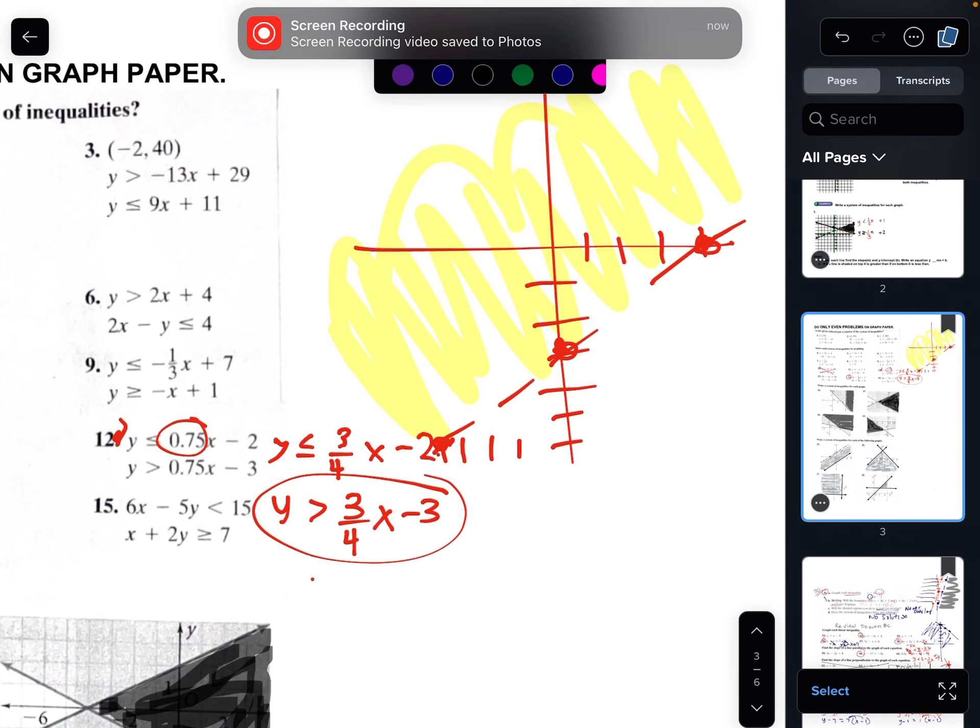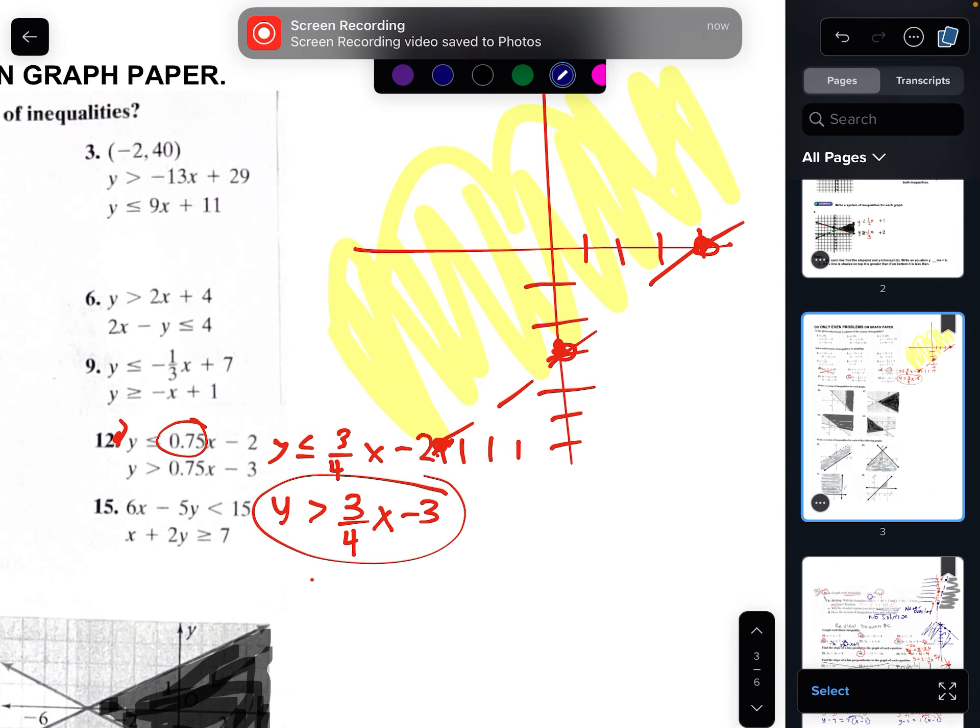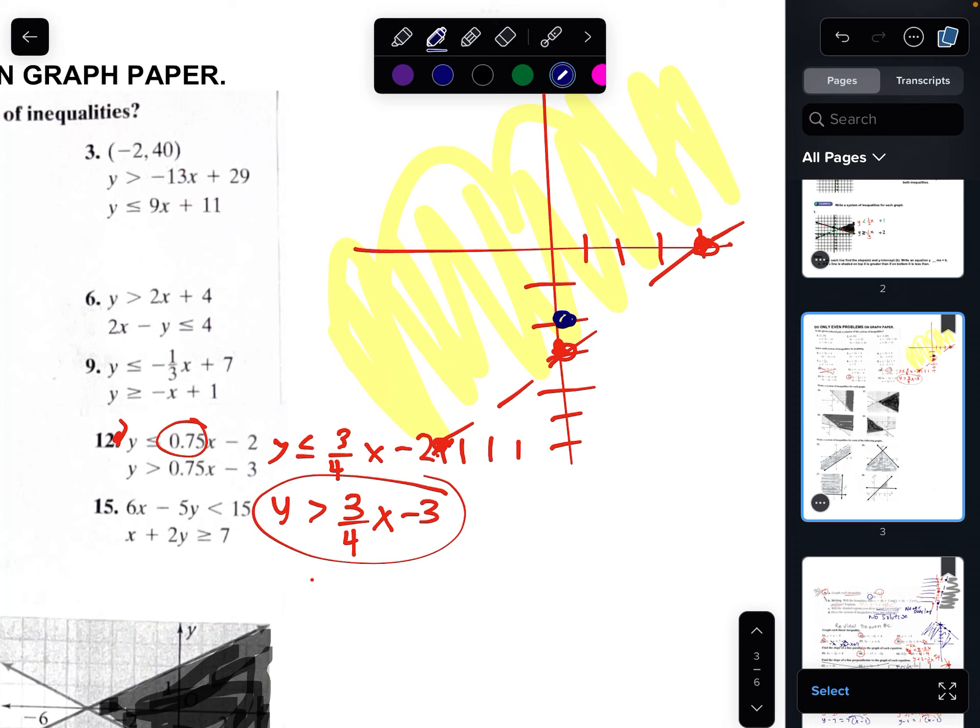Okay. That's done recording. At negative 2. Up 3, over 4. Down 3, 1, 2, 3, over 4. Down 3, 1, 2, 3, over 4. And it is a solid line. That's a little bit off.